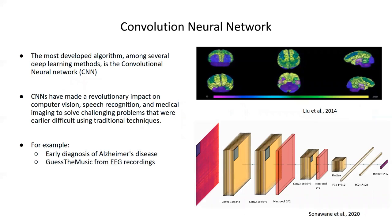The most established algorithm among several deep learning methods is the convolutional neural network. Deep learning based methods have successfully recognized patterns in brain activity from functional MRI, EEG, MEG, etc. There are two mentioned works that demonstrated different domains — for example, early diagnosis of Alzheimer's disease, where a brighter region of interest tends to be more affected by the progression of the disease.